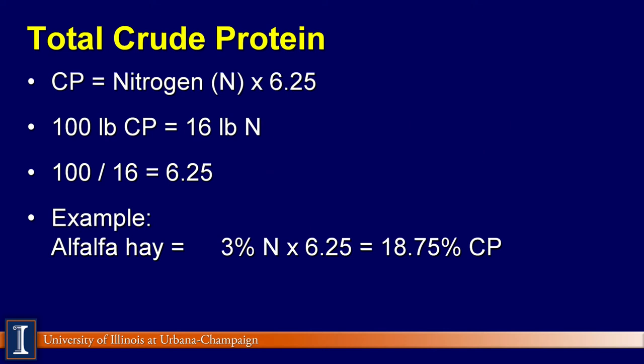The value of 6.25 is used because there are 16 pounds of nitrogen in 100 pounds of protein. Therefore, 100 pounds of protein divided by 16 pounds of nitrogen gives a constant value of 6.25.